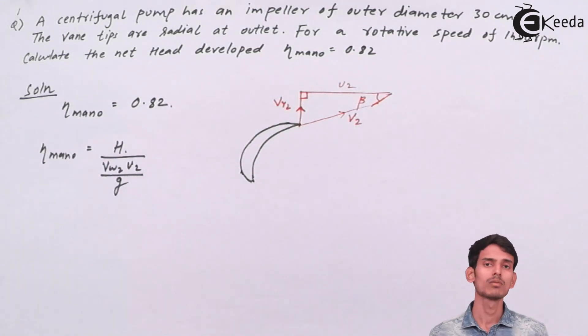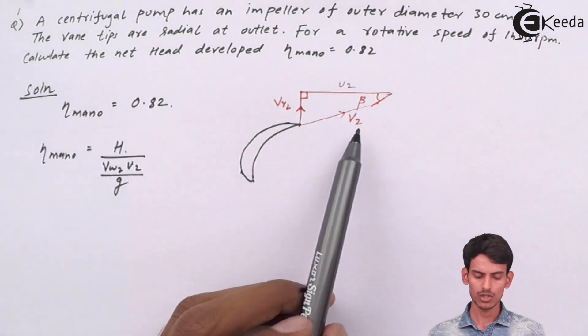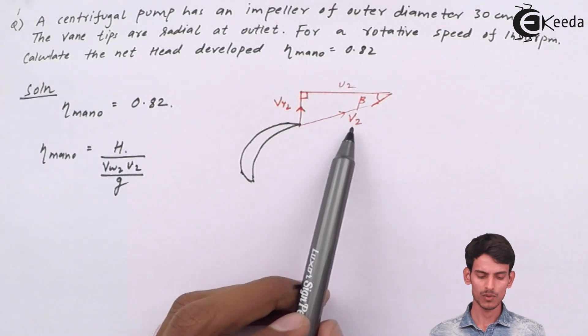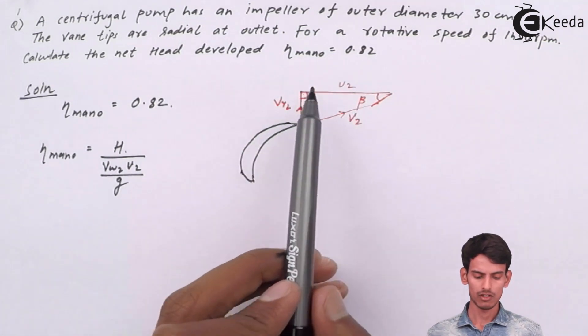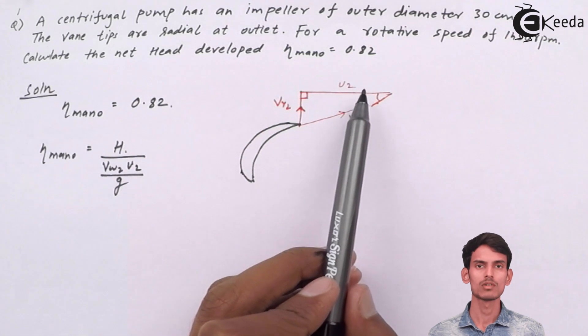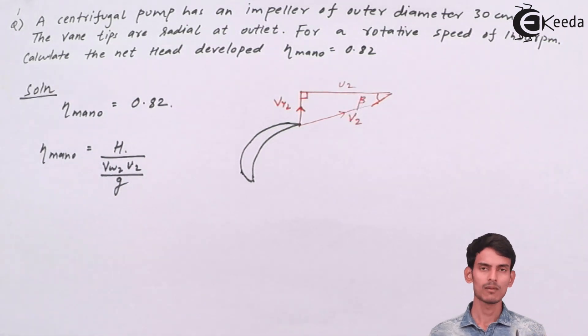And I've already told earlier that VW2 is nothing but the component of the absolute velocity. Now, absolute velocity is V2. If you take component of absolute velocity, horizontal component, it will be similar to V2. They are similar to U2. So VW2 is nothing but it is U2. Both are same in this question.